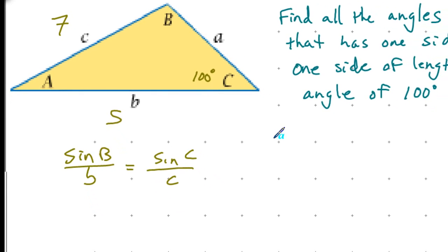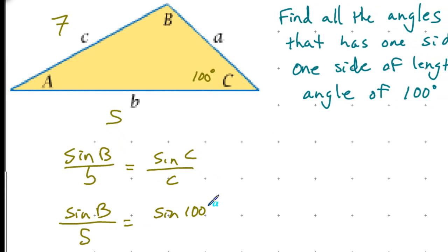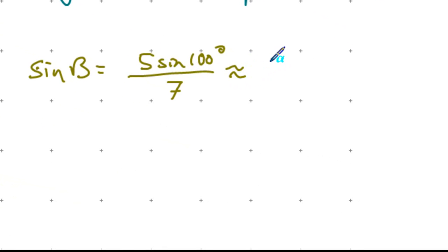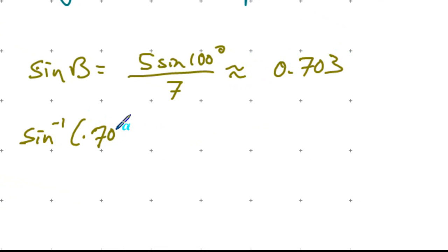Going through the simplification, sine of B equals 5 times sine of 100 degrees all over 7, which is approximately 0.703. The arc sine of 0.703 gives an angle value of approximately 44.7 degrees.